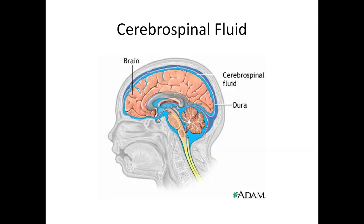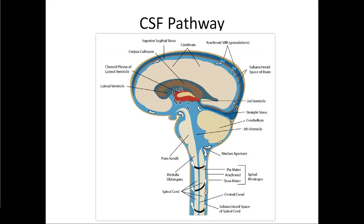The cerebrospinal fluid surrounds our brain in the arachnoid mater, is in the ventricles, and is in the spinal cord — it circulates through all of this. Cerebrospinal fluid is produced at the choroid plexus of the lateral ventricle from the blood, and it circulates down into the third and fourth ventricles and into the spinal cord.